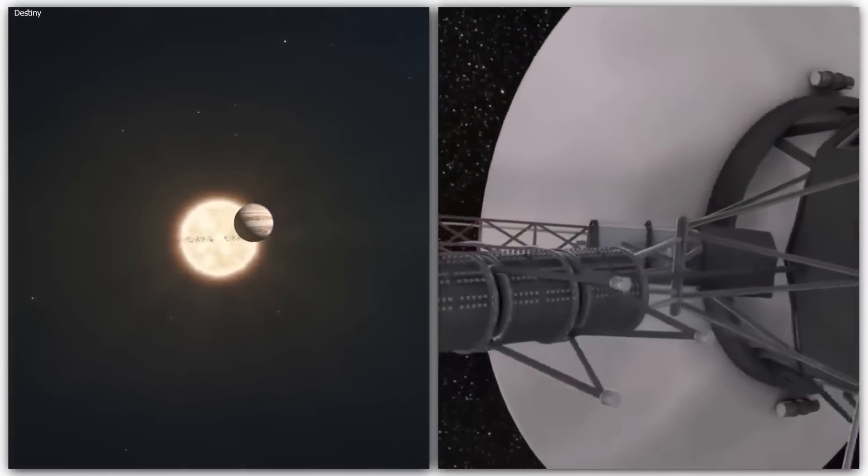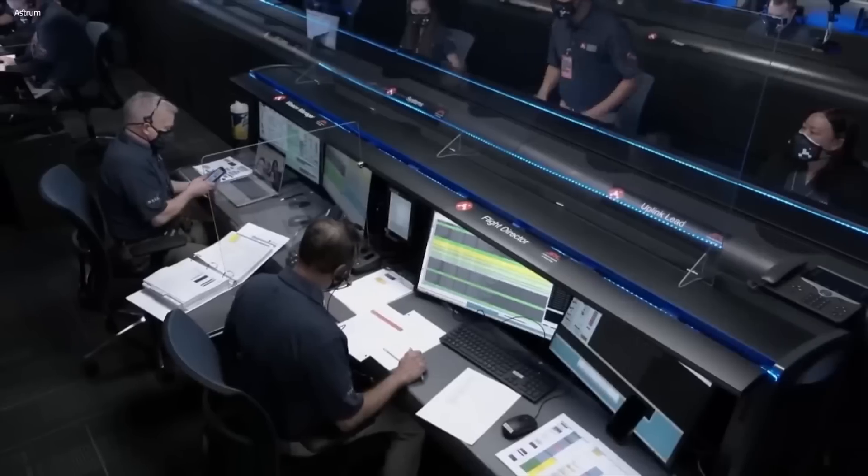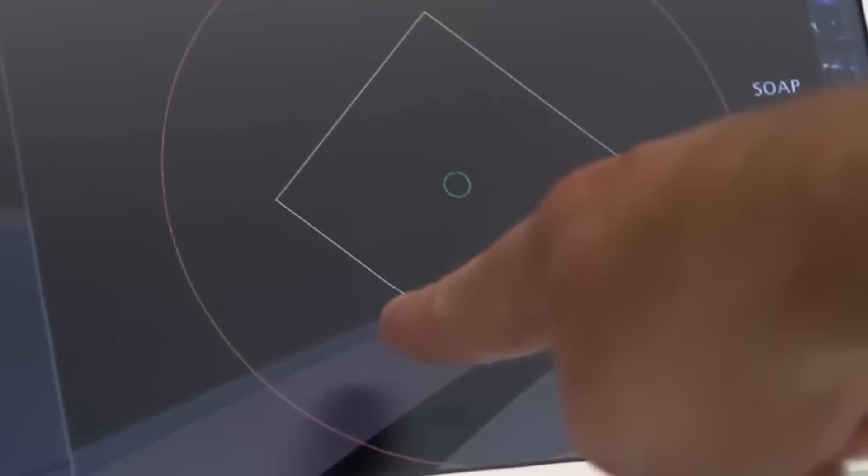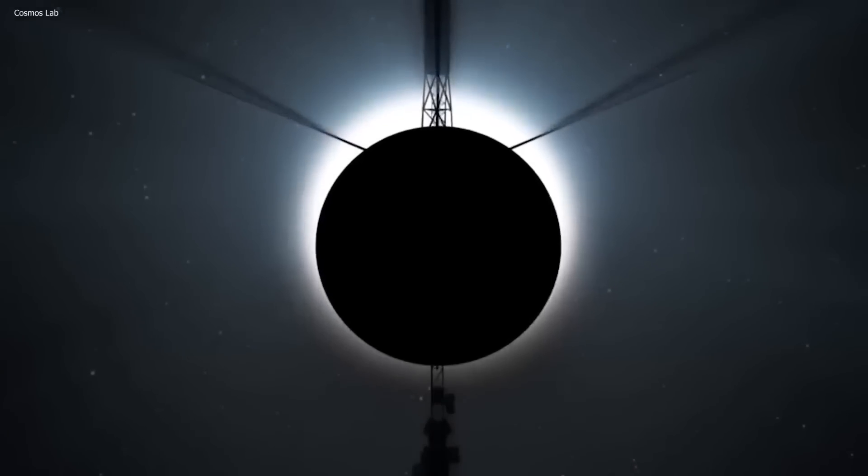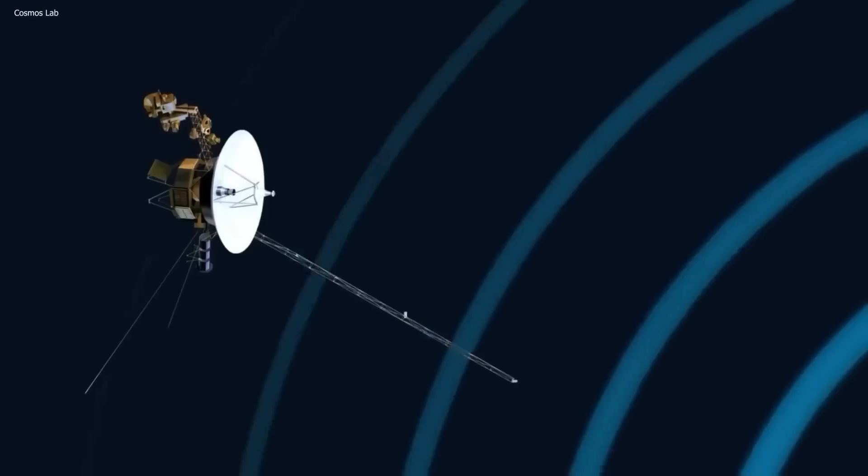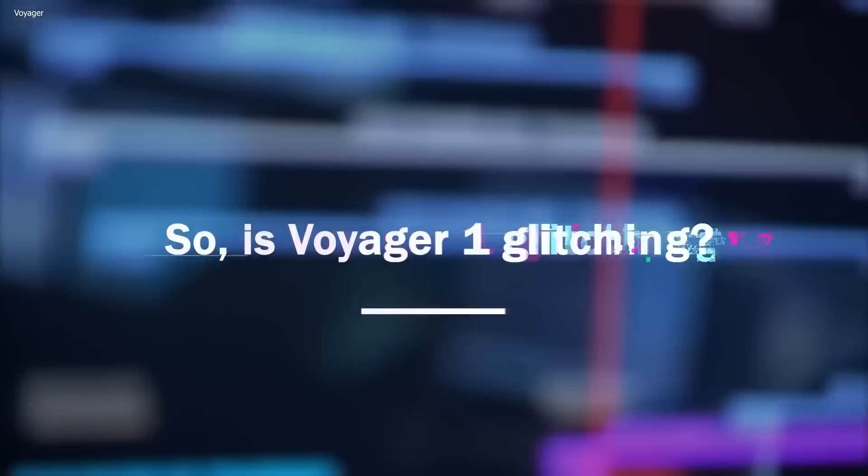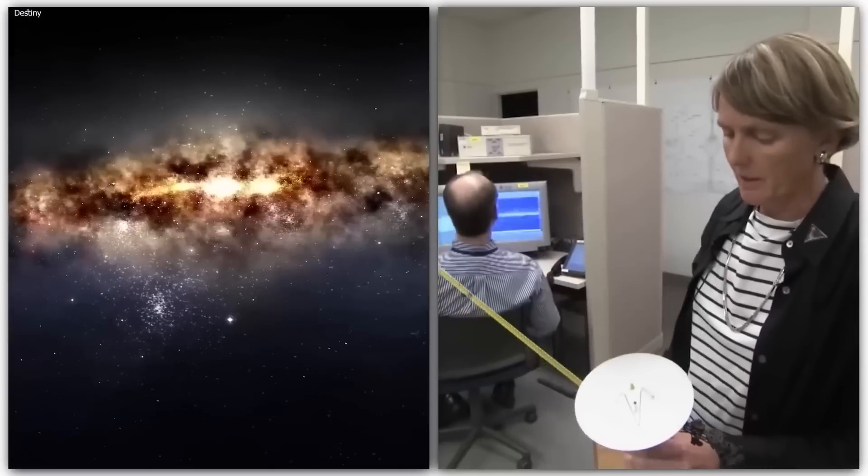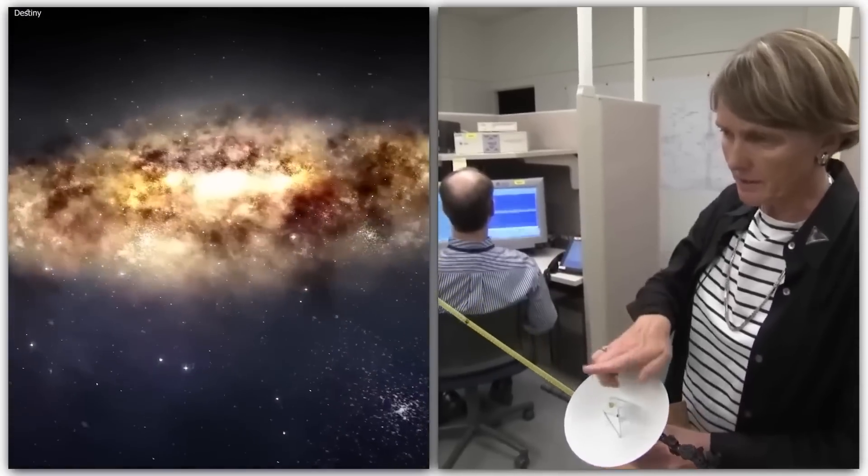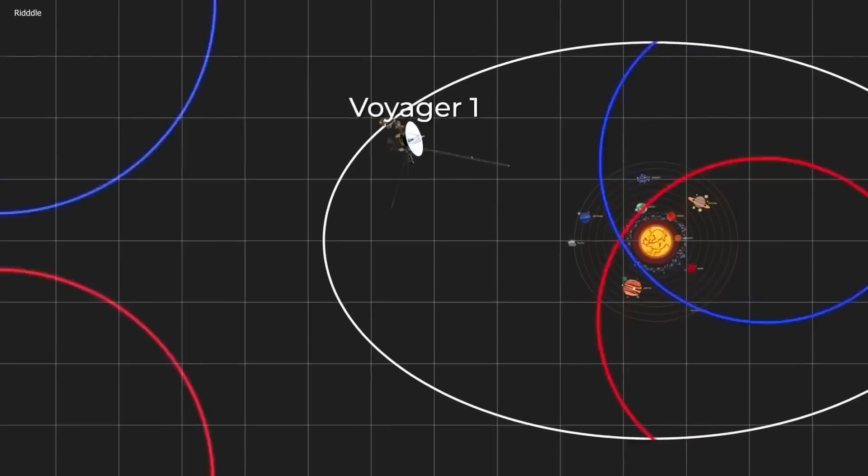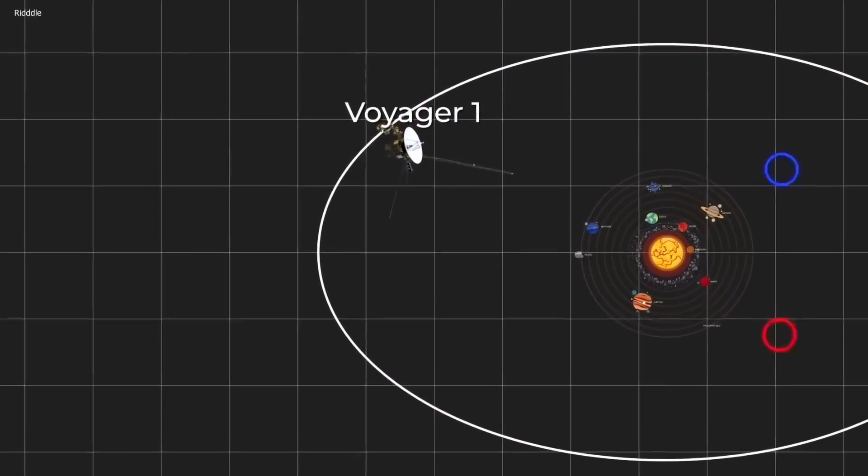Yet while Voyager 1 continues to function normally, mission scientists recently noted that it seemed uncertain about its whereabouts in space, without entering safe mode or otherwise sounding an alarm. So when weird information came back to Earth from a billion miles away, everyone was alert. So is Voyager 1 glitching? Now that the Voyager has been given free reign to enter and explore deep space, mistakes can't be afforded. Many discoveries have been made by the spaceship, but it has also encountered many abnormalities and riddles.